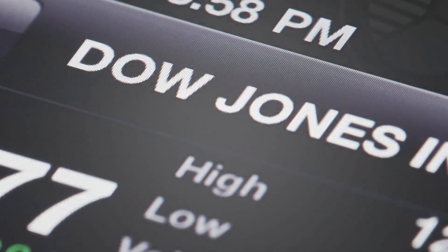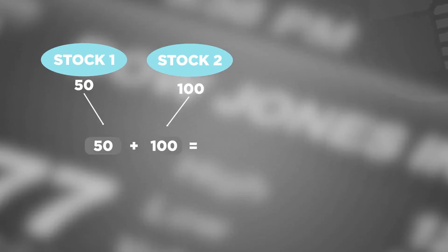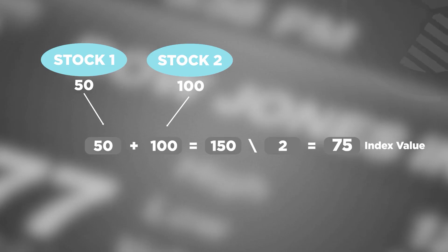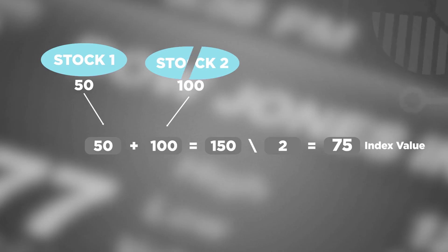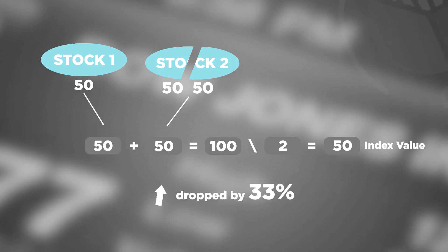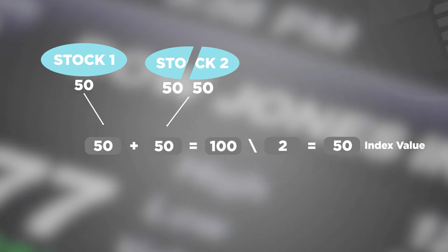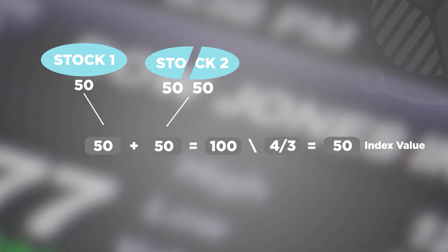The Dow Jones people knew about this problem and decided to deal with it. Suppose there are two stocks in this index with prices of 50 and 100 — the index value is 75. Suppose the second stock splits two for one, its price goes from 100 to 50. The index value would drop from 75 to 50, a 33% drop when nothing fundamental has happened. What the Dow Jones people did was change the divisor from 2 to 1 and 1/3, so that 50 plus 50 divided by 1 and 1/3 brings it back to 75. That's how they accounted for the split.